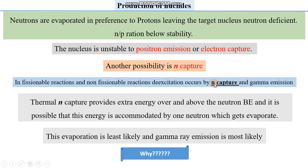Whenever a neutron is captured, it carries certain kinetic energy. This kinetic energy increases the excitation energy of the nucleus beyond the ground stable level. The excess energy provided by this neutron must be emitted in the form of gamma radiation. This thermal neutron capture provides extra energy over and above the binding energy of a neutron, so another neutron evaporation is then expected.